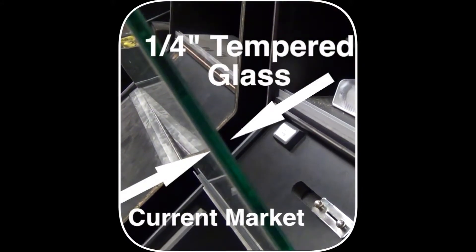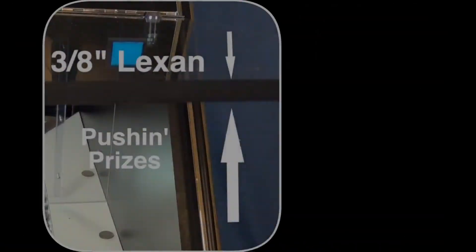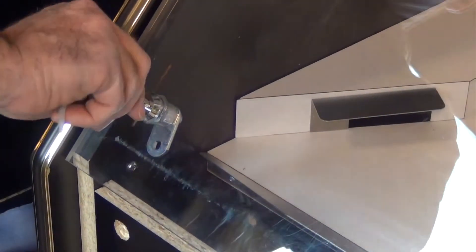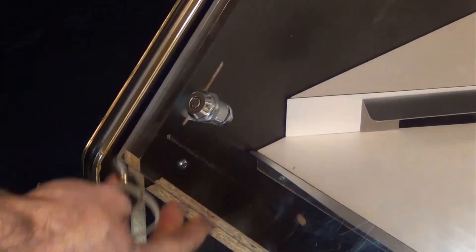Current units on the market use one-quarter inch tempered glass. Push-in Prizes utilizes a three-eighths inch Lexan front that is hinged with four corner locks supported by the one and a half inch thick frame.